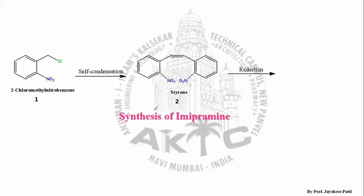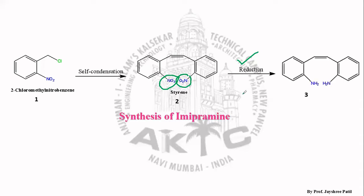Styrene undergoes reduction. In the styrene molecule there is a nitro group. Whenever a nitro compound undergoes reduction by using reducing agents such as tin metal in the presence of HCl, the NO₂ is converted into NH₂ — that is, the nitro group is converted into an amino group. So we are getting structure 3. Structure 1 (2-chloromethyl nitrobenzene) undergoes self-condensation to give styrene, and styrene undergoes reduction to produce the amino compound, that is structure 3.